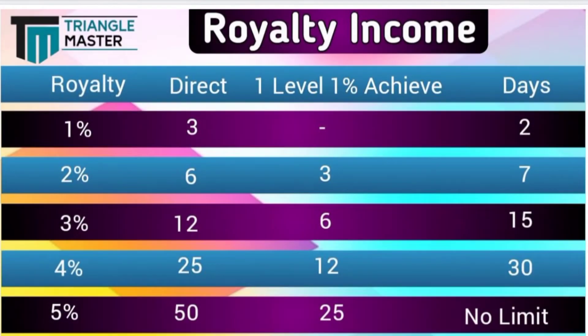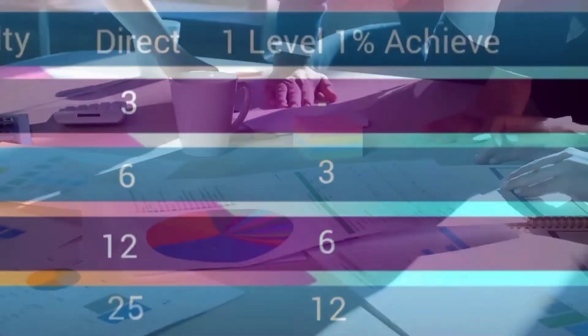Our next income is royalty income — from 1% to 5%. For 1% royalty: 3 directs compulsory, time limit is 2 days. For 2% royalty: 6 directs compulsory, first-level 1% achievers must have 3 members, time is 7 days. For 3% royalty: 12 directs compulsory, first-level 1% achievers must have 6 members, time is 30 days. For 5% royalty: 50 directs compulsory, first-level 1% achievers must have 25 members, no time limit.